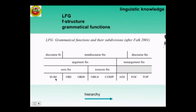There are two important connections between the tiers of discourse and non-discourse functions and argument and non-argument functions. One is that the subject is the only function which is part of both dichotomies — it is an argument function and a discourse function at the same time. And the second is that by default, the topic is subject and the subject is topic.